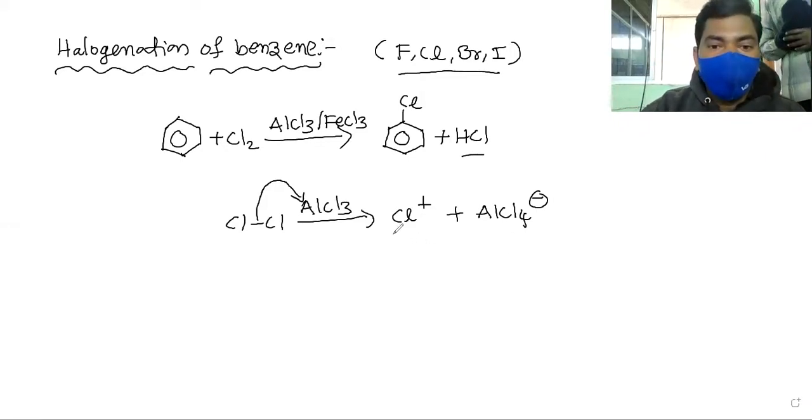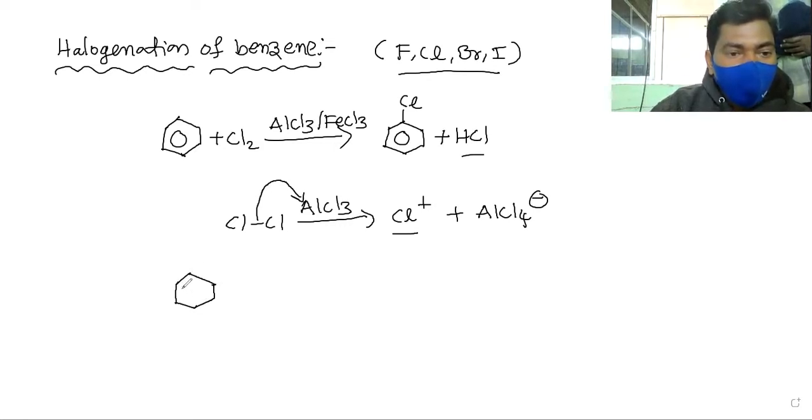The chlorine electrophile is generated. In the next step, the electrophile attacks the benzene ring. The pi electrons attack the chlorine, and a bond forms between chlorine and the benzene ring.